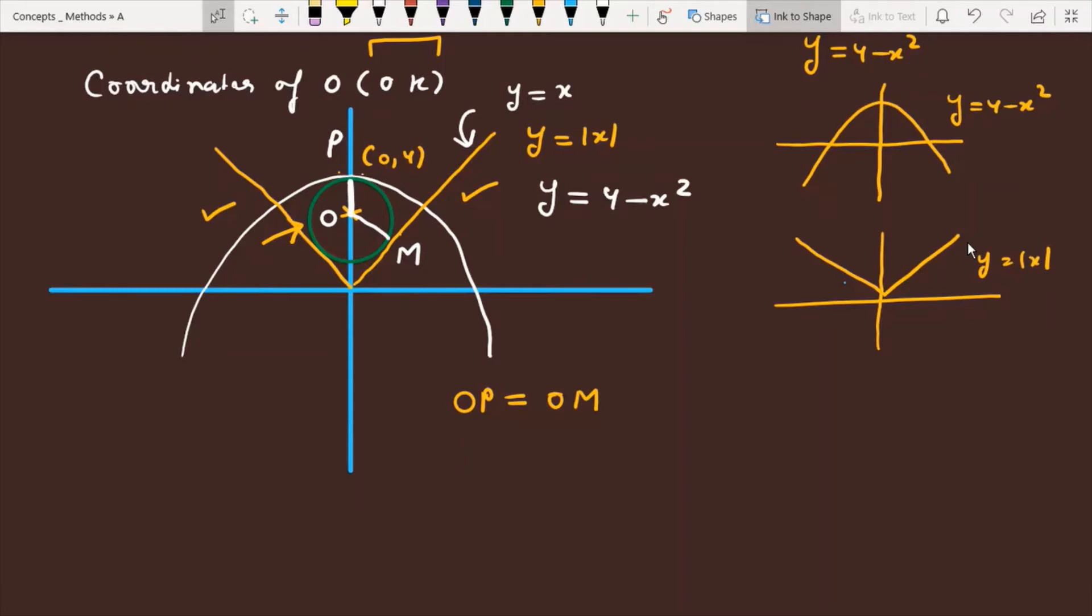Now let's talk about the length of OP. So P coordinate you have (0, 4), and the circle center you have (0, k). So if we talk about OP, this will be equal to k minus 4, which is a positive quantity. This is actually 4 minus k, where 4 minus k is greater than 0. So this is OP.